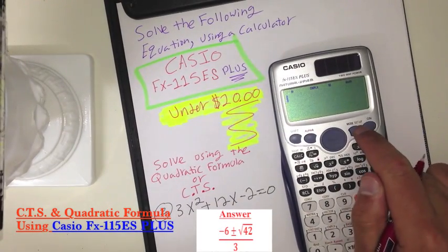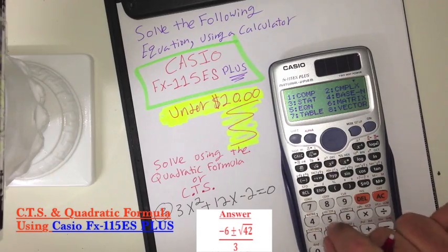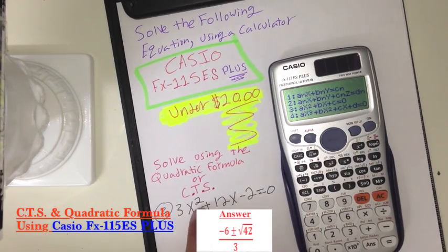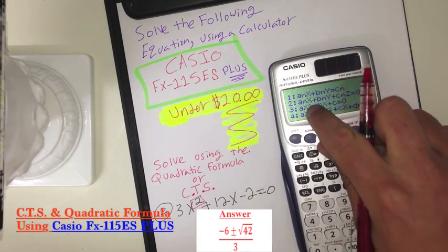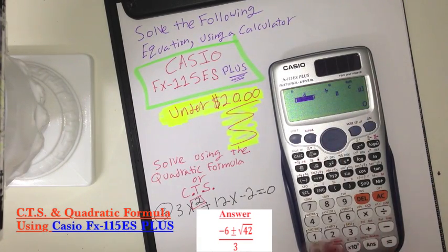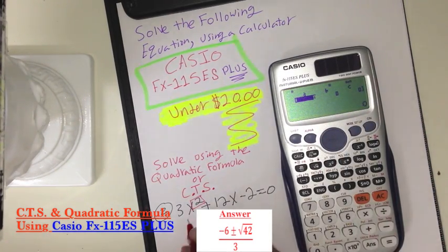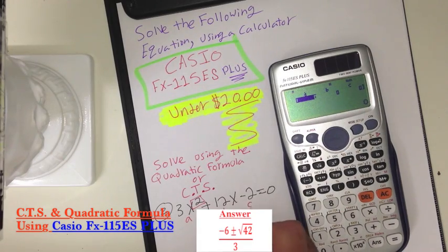So you basically go to mode. You go to 5 which is equation. And in this case we have a second degree equation, so therefore we will use number 3. And we basically just plug all our numbers in. Our A, our B, and our C.